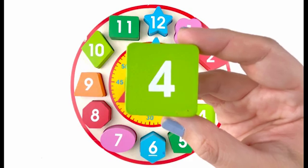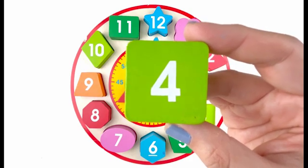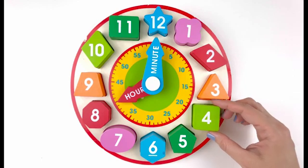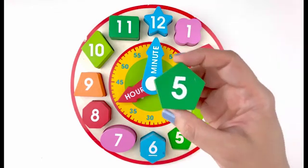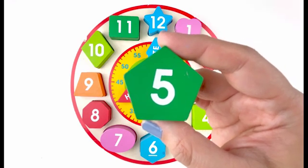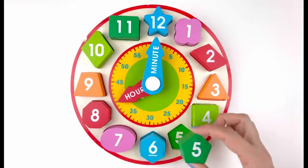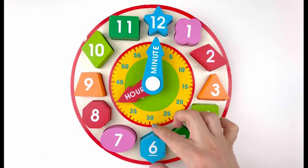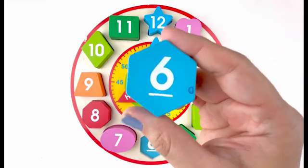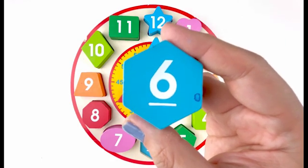Number four. This number four is on a green square. Number five. This number five is on a dark green pentagon. Number six. This number six is on a blue hexagon.